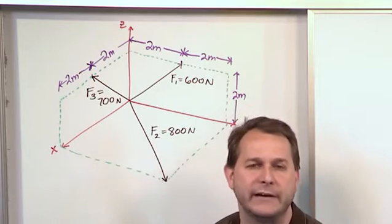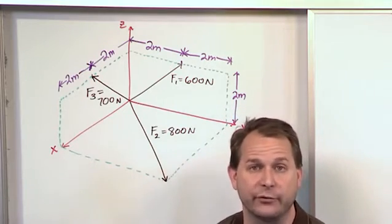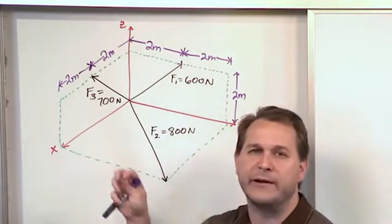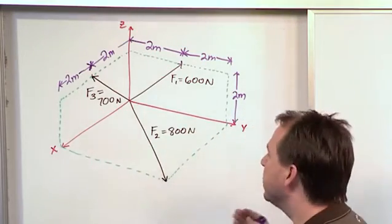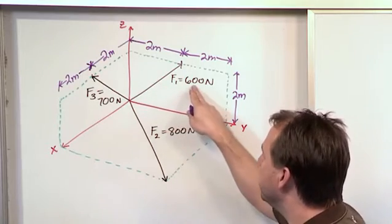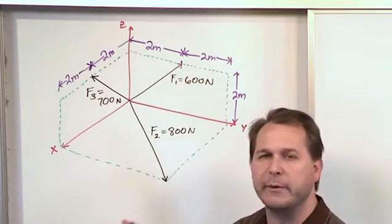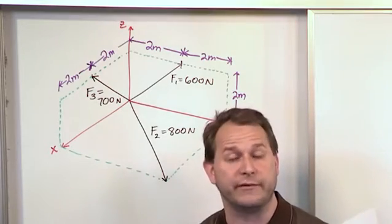Notice we don't have any direction angles or direction cosines or anything labeled on the drawing. So we need to really pull that information out of the drawing. So what we really want to do is look at vector F1. We know it's 600 newtons. We know which way it's pointed based on the drawing, but we want to write its Cartesian representation.